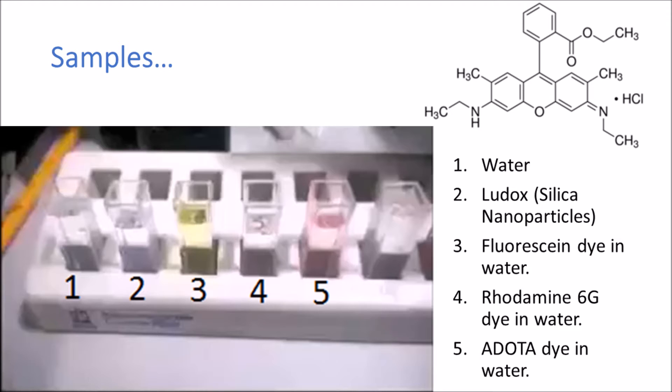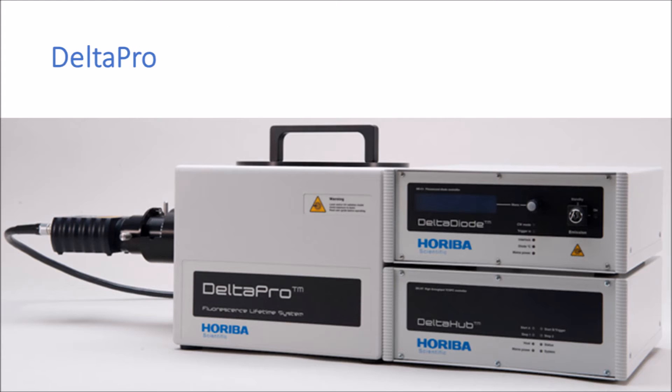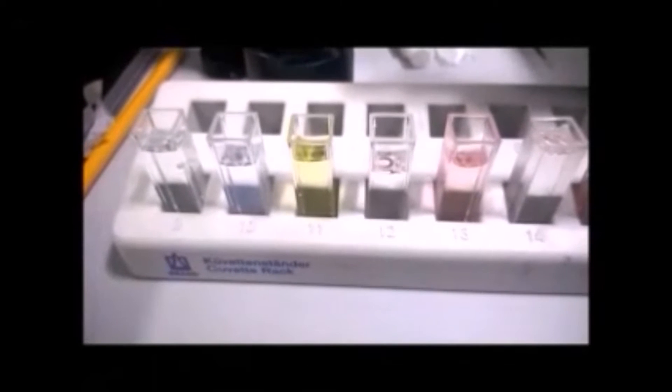Instead of looking at these samples using standard room light, I'm going to examine them using a laser. I'm going to use a delta diode 510 laser, which is manufactured at Horiba Scientific IBH, and attach it to one of our simplest filter-based sample chambers.